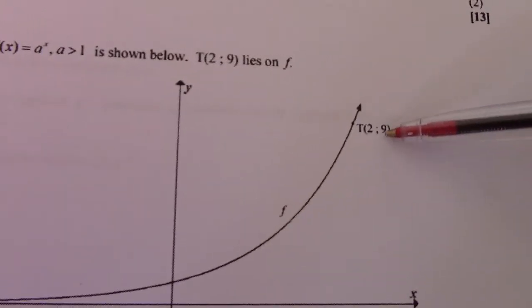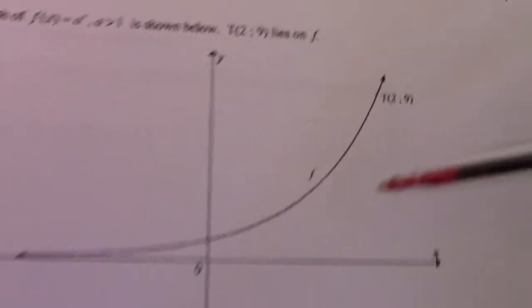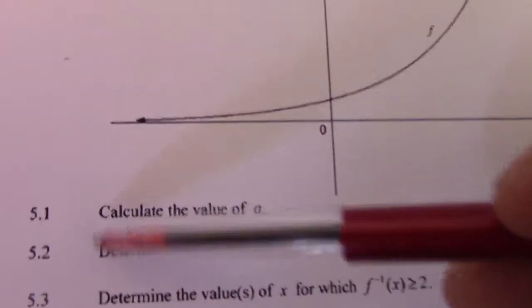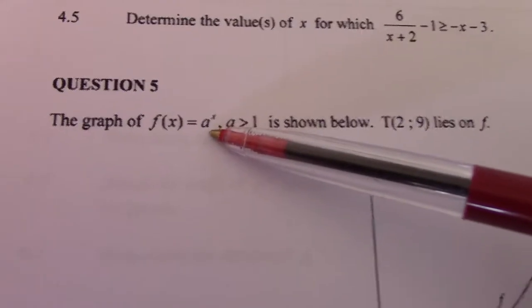The graph of exponential. It has a point (2, 9) on it. Number 1: Calculate the value of a.